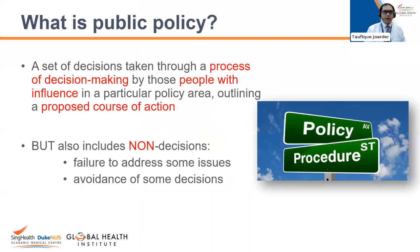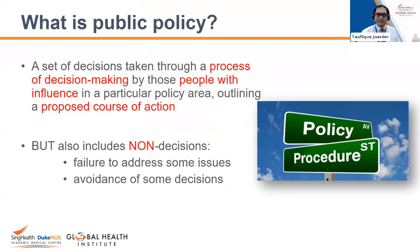Now let's go to the policy part. This is the formal definition of policy — it's a set of decisions taken through a process of decision making by people of influence in a particular area, and they propose a course of action as well. But as analysts, we need to think of the things that are not in the policy and ask why these decisions or policies are not included or discussed within the policy circle. Is it a deliberate omission? Is it because of the lack of knowledge or lack of evidence?